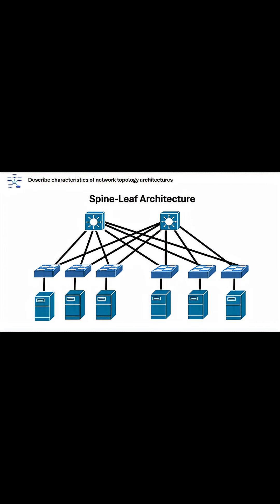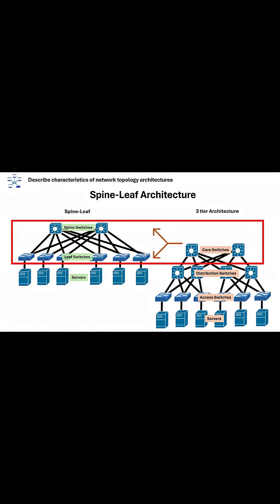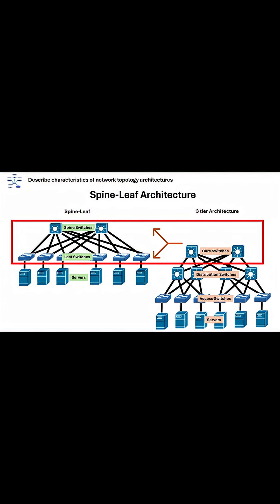Another topology is the spine-leaf architecture. The spine and leaf network topology is a variation of a three-tier network architecture in a full mesh topology, where the core layer is split into two parts: a spine and a leaf.